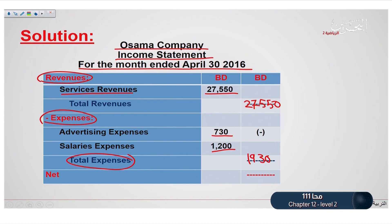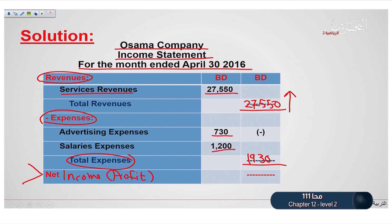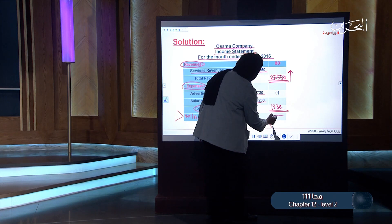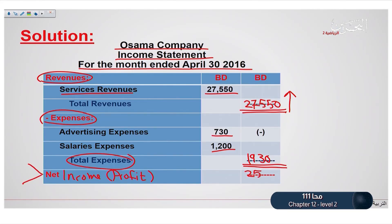Now, to determine whether we are having net income or net loss, we look at the total revenue amount and the total expense amount. It is obvious that the total revenue amount is higher than the total expense amount, so we write net income, which means the company is making profit. To calculate the amount of profit, we subtract the total revenue from the total expense, and the result is $25,620 Bahraini Dinar.